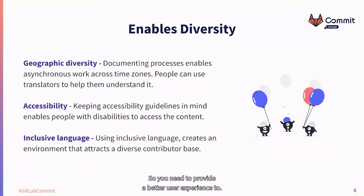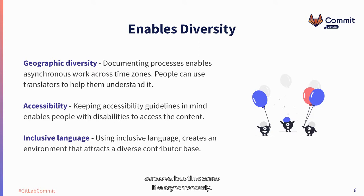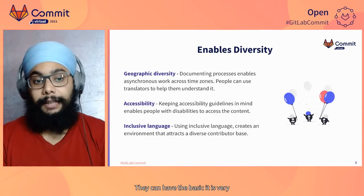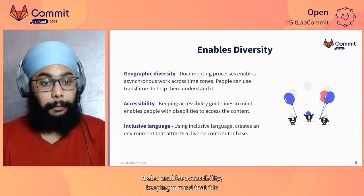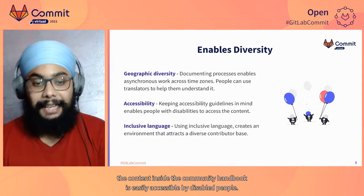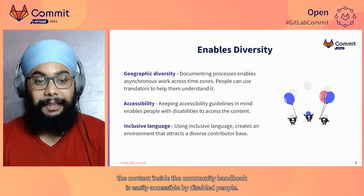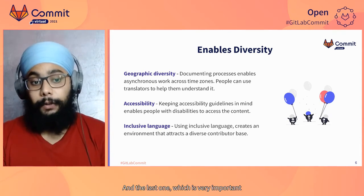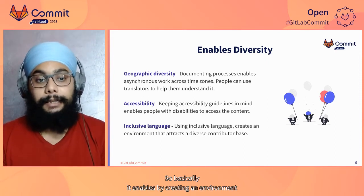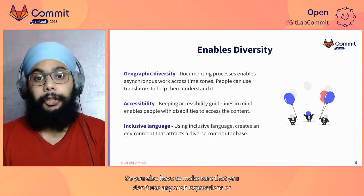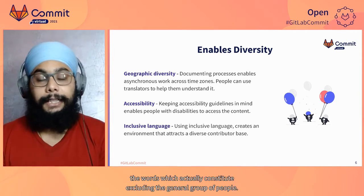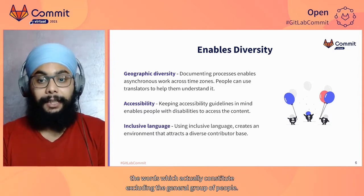You need to provide a better user experience. The handbook also enables diversity — it can be accessible to people across various time zones who work asynchronously. It can be easily translated so that people can understand it. It also enables accessibility, keeping in mind that the content inside the Community Handbook is easily accessible by disabled people. And it's very important to use inclusive language, creating an environment that attracts diverse contributors, avoiding expressions or words that exclude general groups of people.